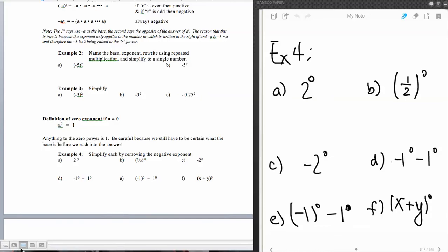Alright, section 7.4 continued. We're talking about a zero exponent. As long as our base does not equal zero, anything to the zero power is equal to one.